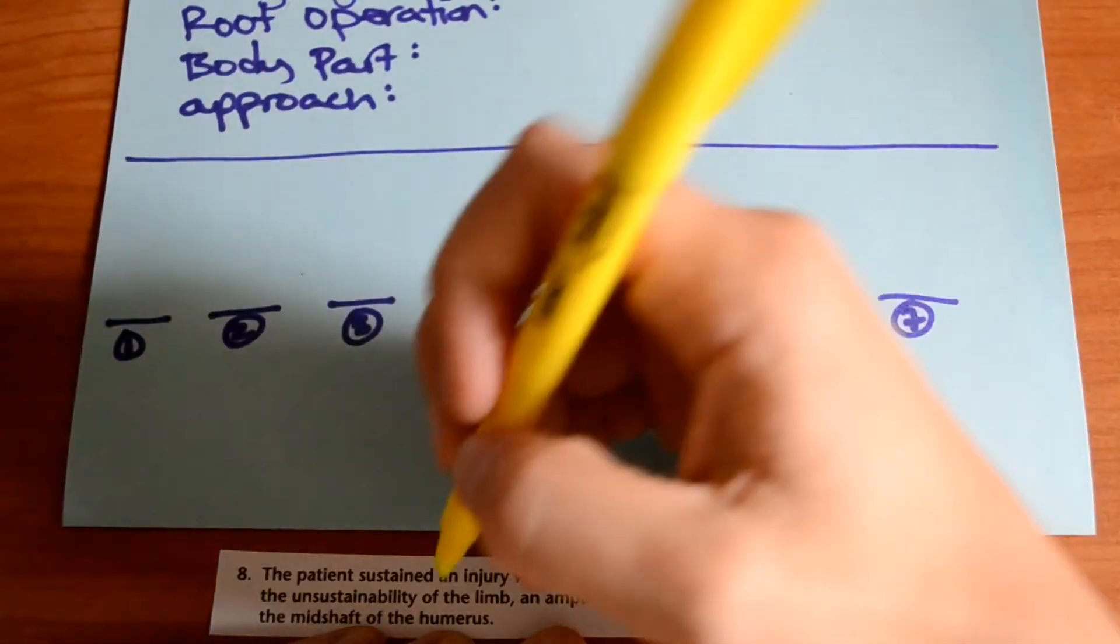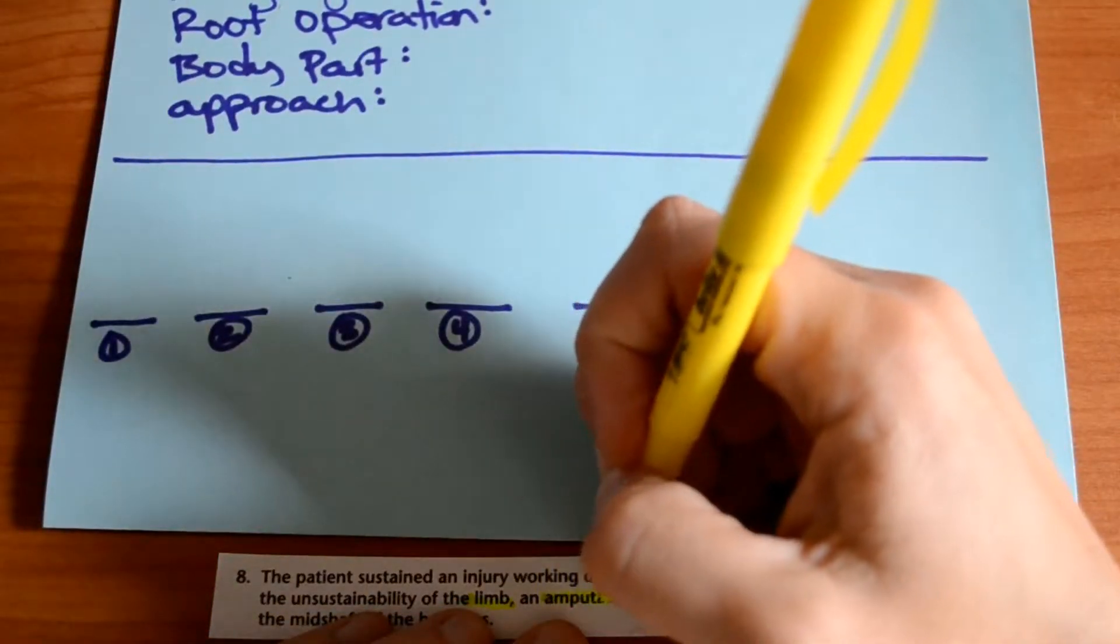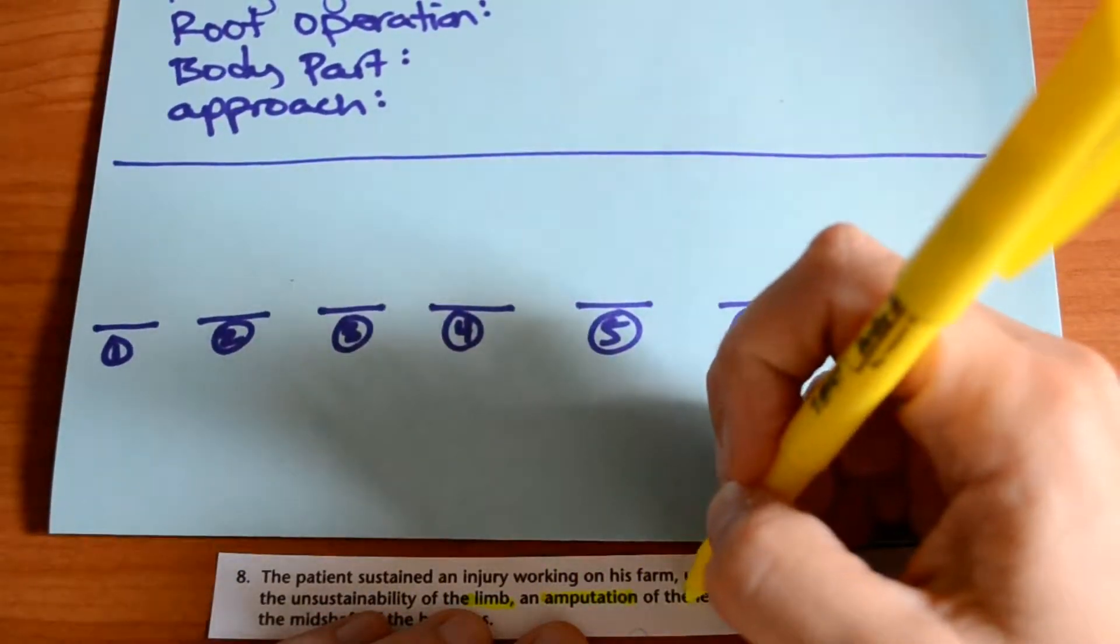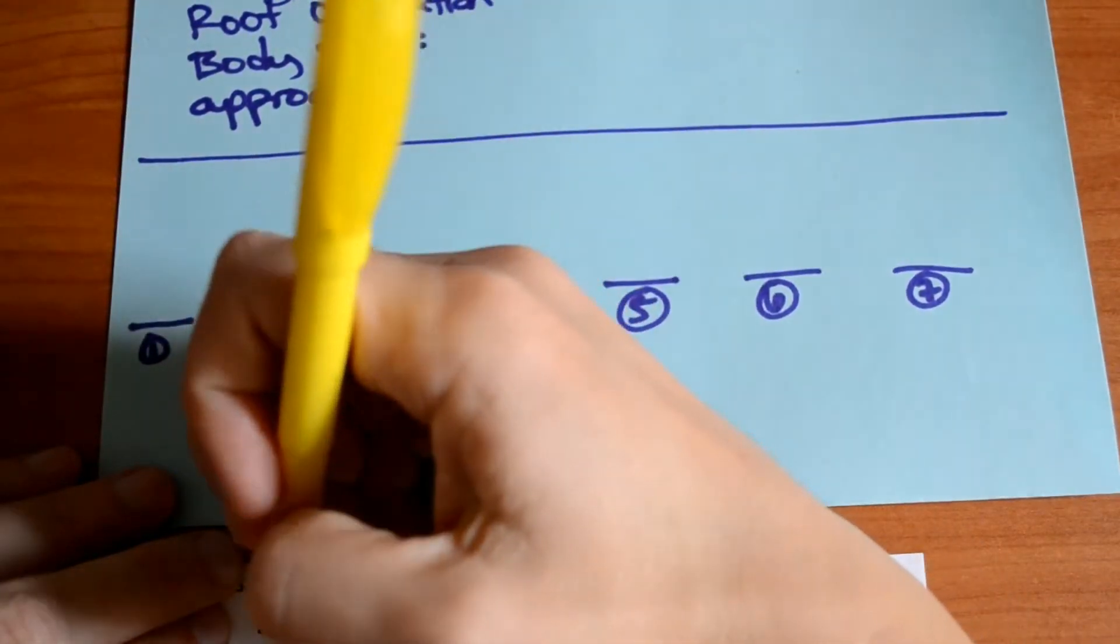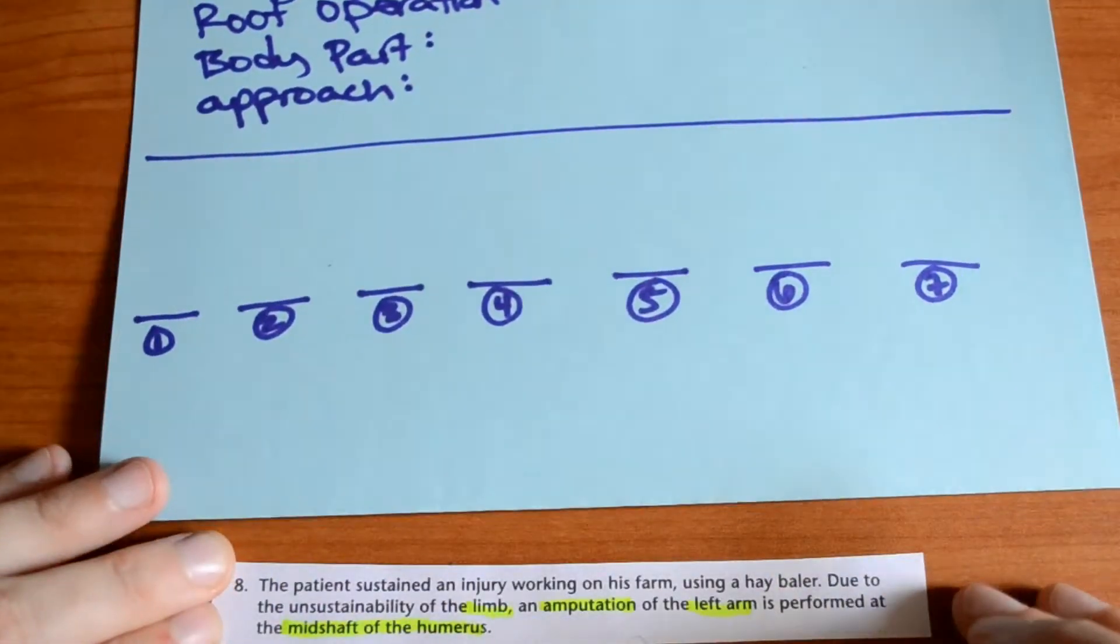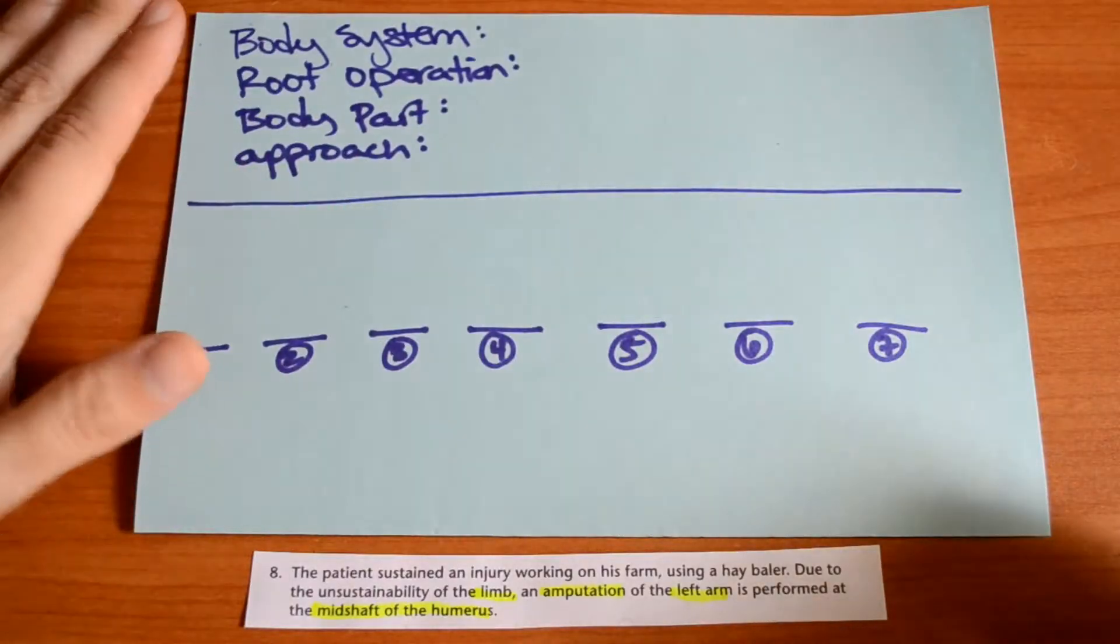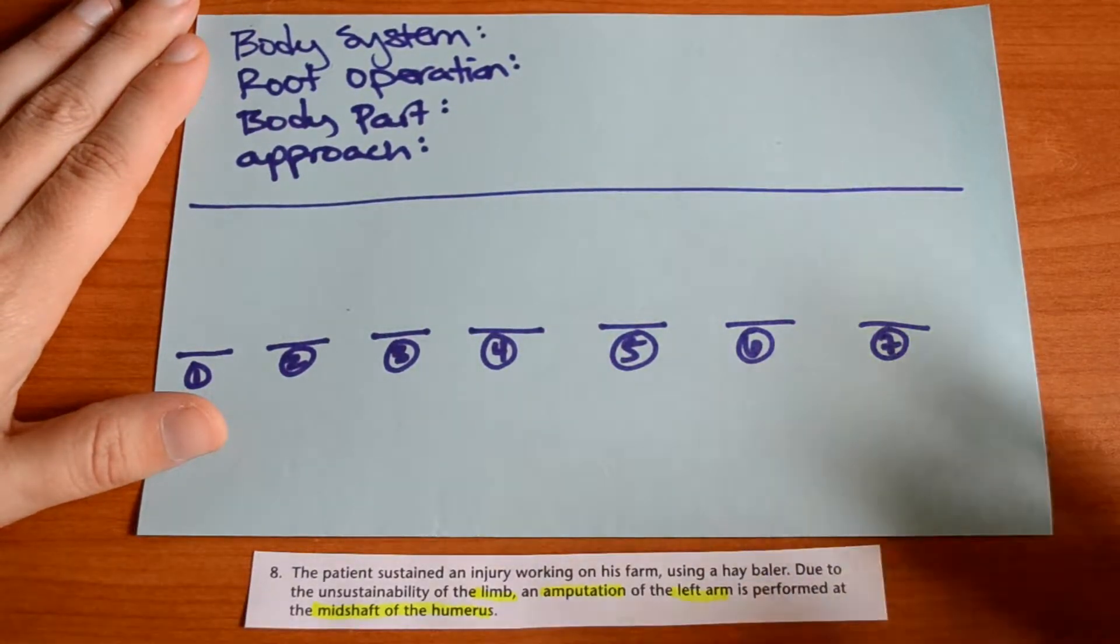So from this information, we know there's a limb involved, they say amputation, it's the left arm, and they also tell us that the amputation was at the mid-shaft of the humerus. So from there, in our body system, we know that it's going to be the upper extremities because they say arm and humerus.